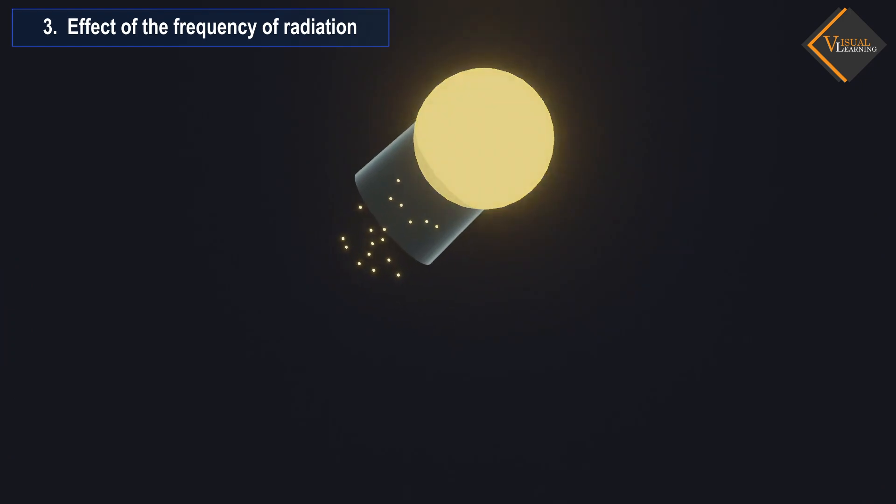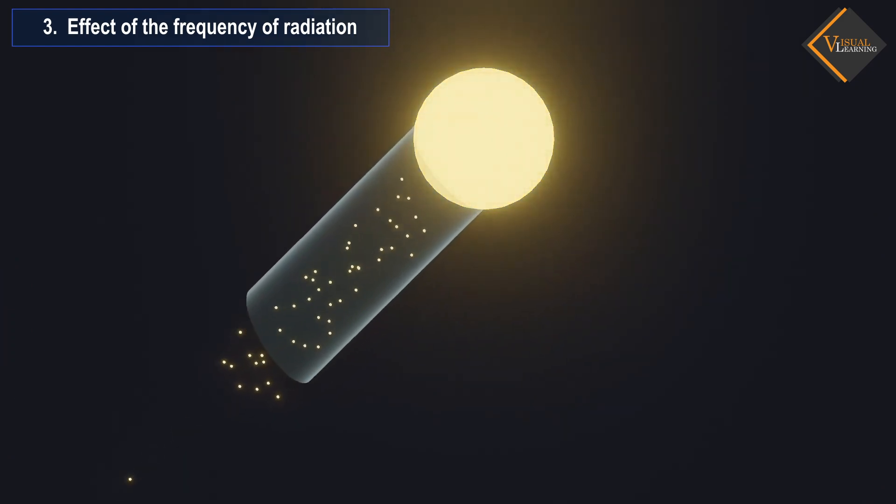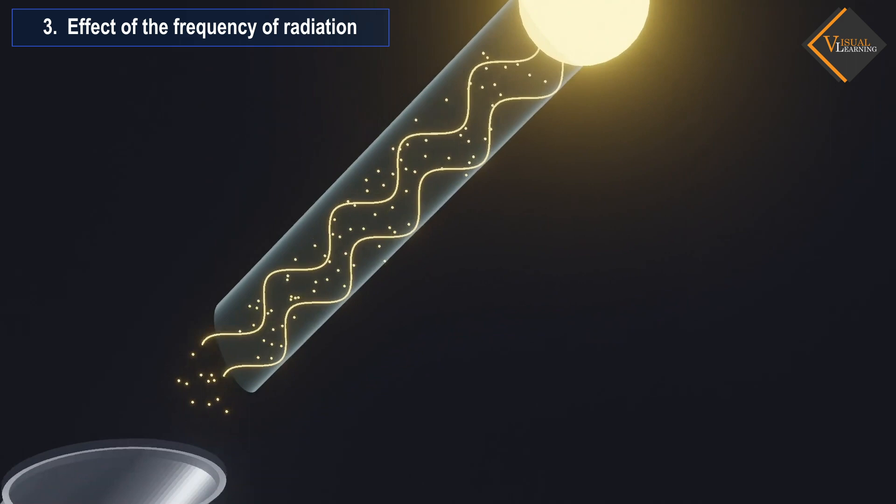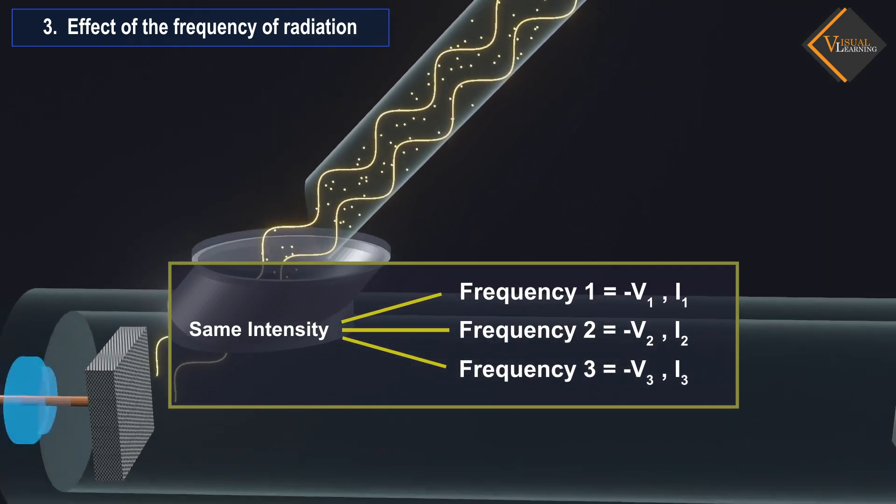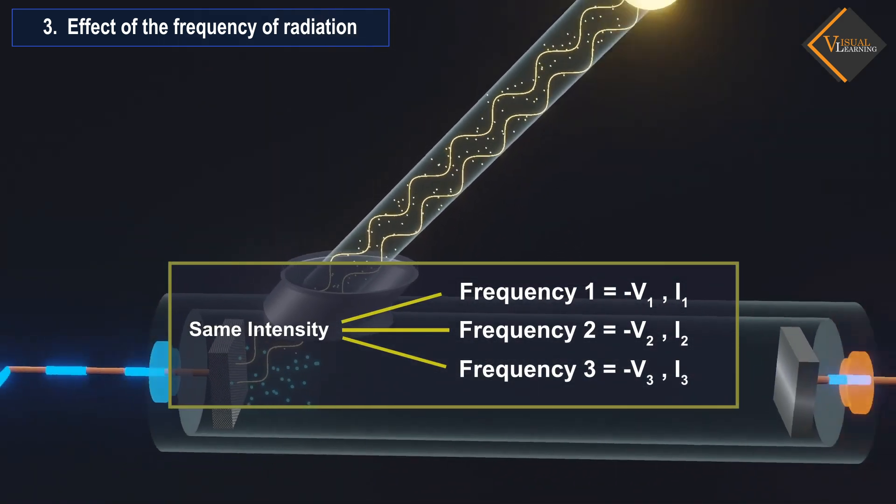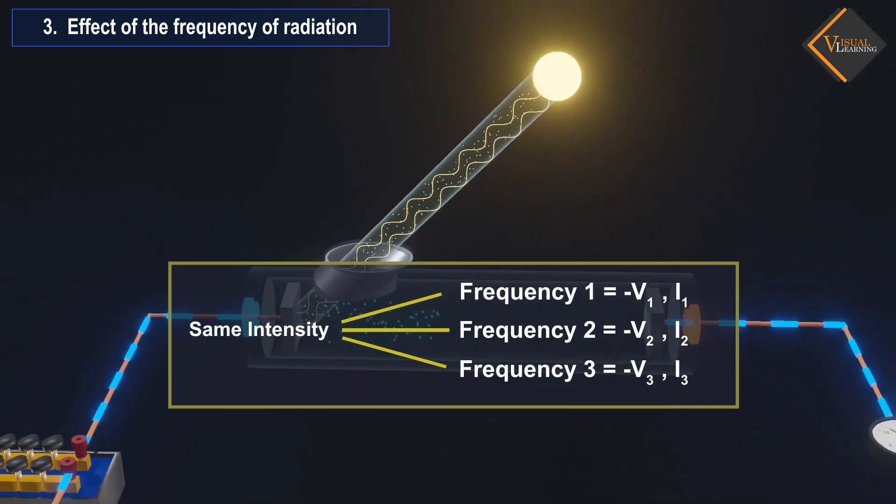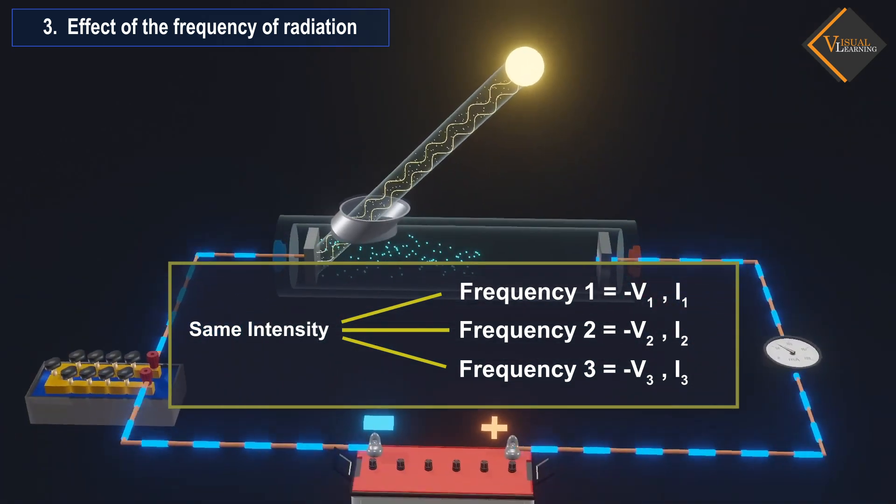Effect of the frequency of radiation: It was found in this experiment that when the same intensity of radiation is applied at different frequencies, the photoelectric current and the value of the stopping potential also vary.